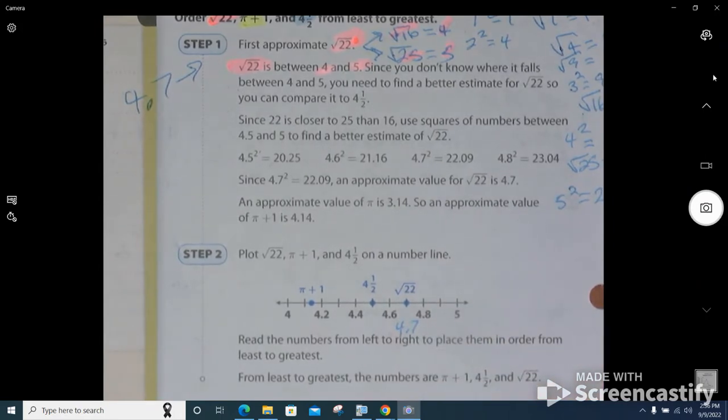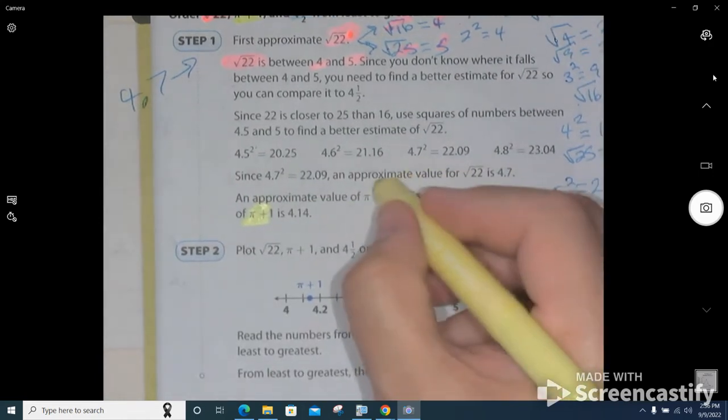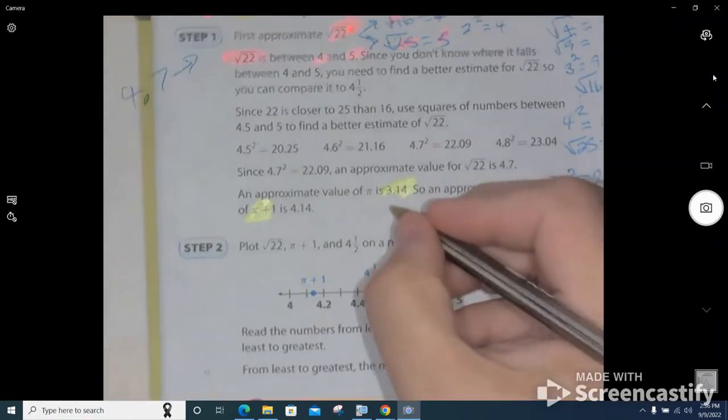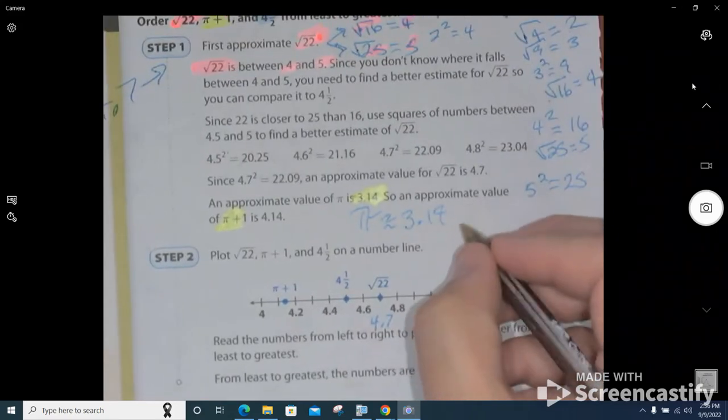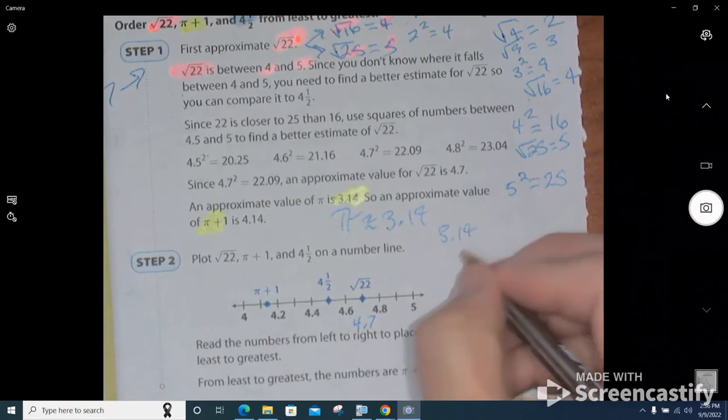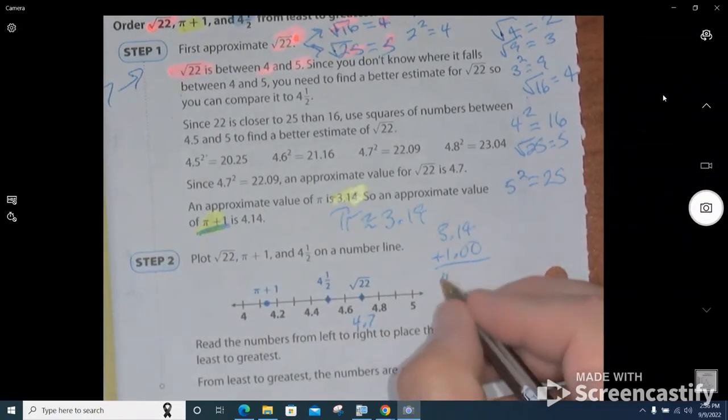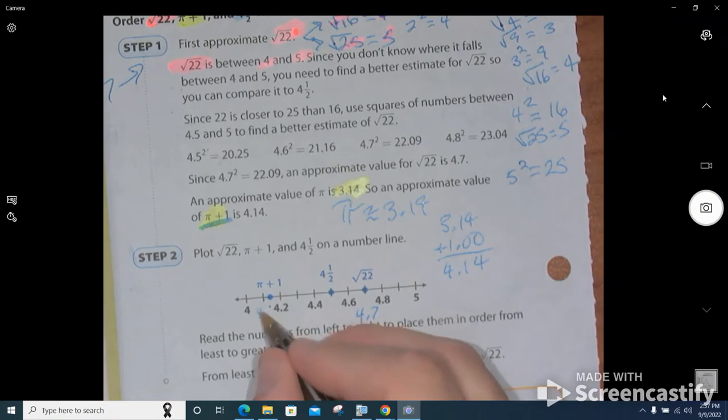Now let's move on to the next thing. π plus 1 is the same as 3.14 plus 1, right? So remember, that pi is about 3.14. So then 3.14 plus 1, right? Because that's what they're asking us, should be about 4.14.